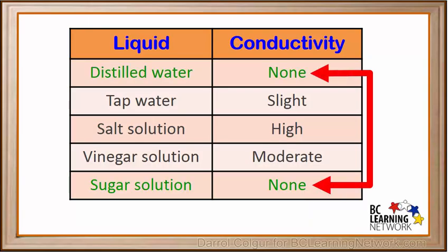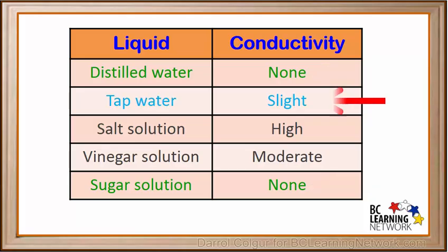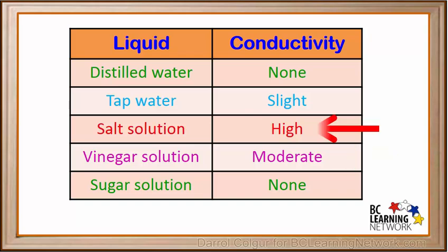To review: distilled water and sugar water are both non-conductors. Tap water is a slight conductor. Vinegar is a moderate conductor. And salt solutions have very high conductivity.